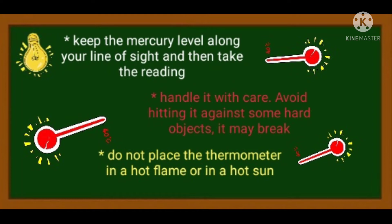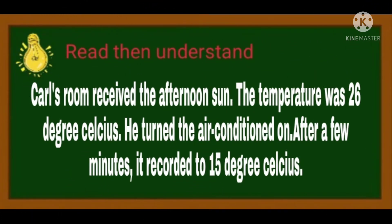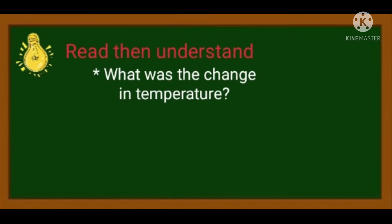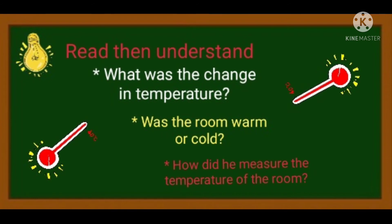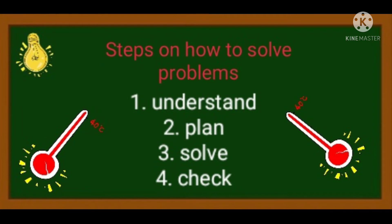Okay, this time we are going to solve problems using thermometer. Balikan natin yung problem kanina about Carl. Then we are going to solve it using the steps in solving word problem. Carl's room received the afternoon sun. The temperature was 26 degrees Celsius. He turned the air condition on. After a few minutes, it recorded to 15 degrees Celsius. What was the change in temperature? Was the room warm or cold? How did he measure the temperature of the room? Using the four steps on how to solve problems. After reading and understanding the problem, atin na pong hihimay-himayin ito isa-isa para masagot natin.